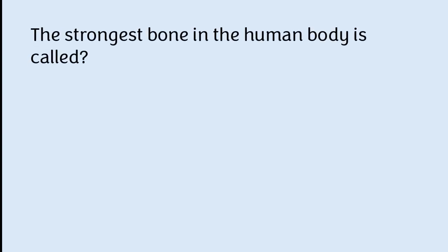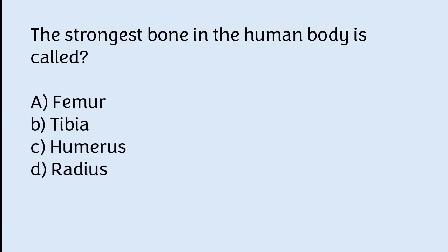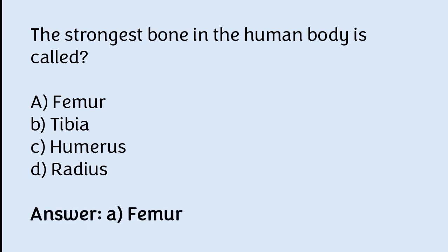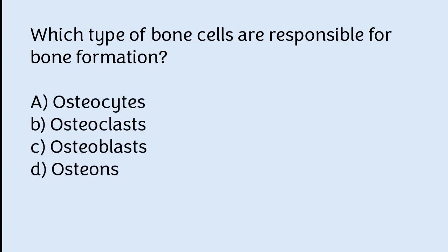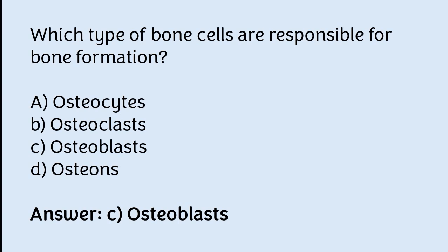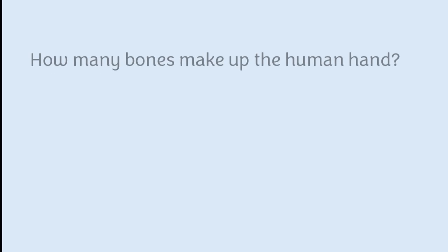The strongest bone in the human body is called: femur, tibia, humerus, or radius. The correct answer is option A — the strongest bone in the human body is called femur. Which type of bone cells are responsible for bone formation? Osteocytes, osteoclast, osteoblast, or osteons. The correct answer is option C — osteoblast is the type of bone cell responsible for bone formation.